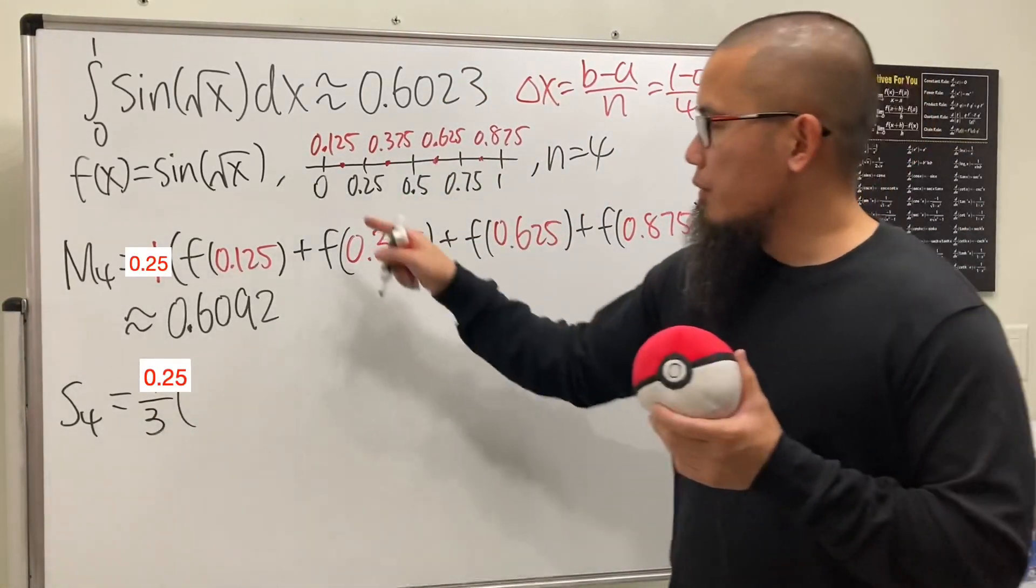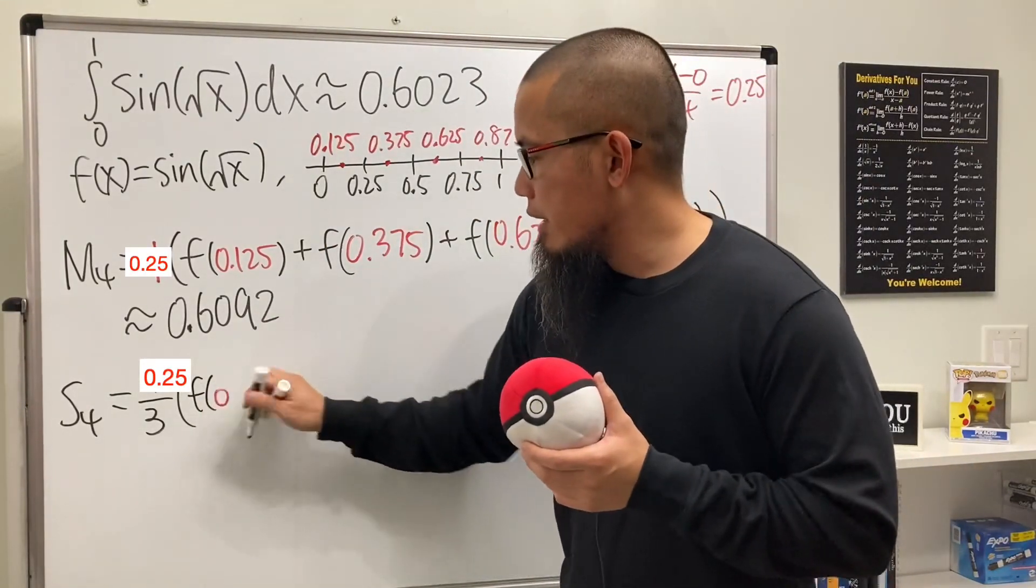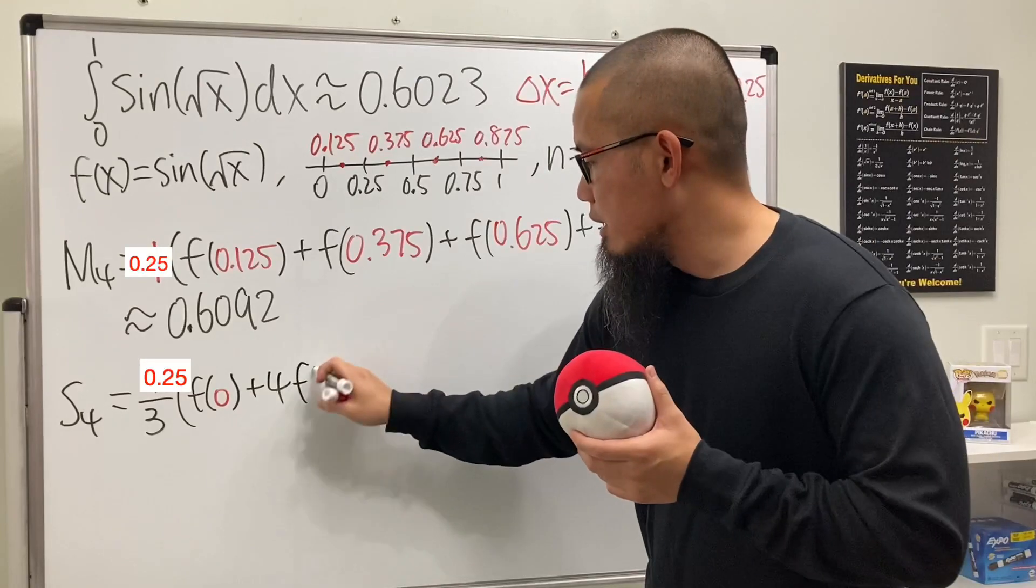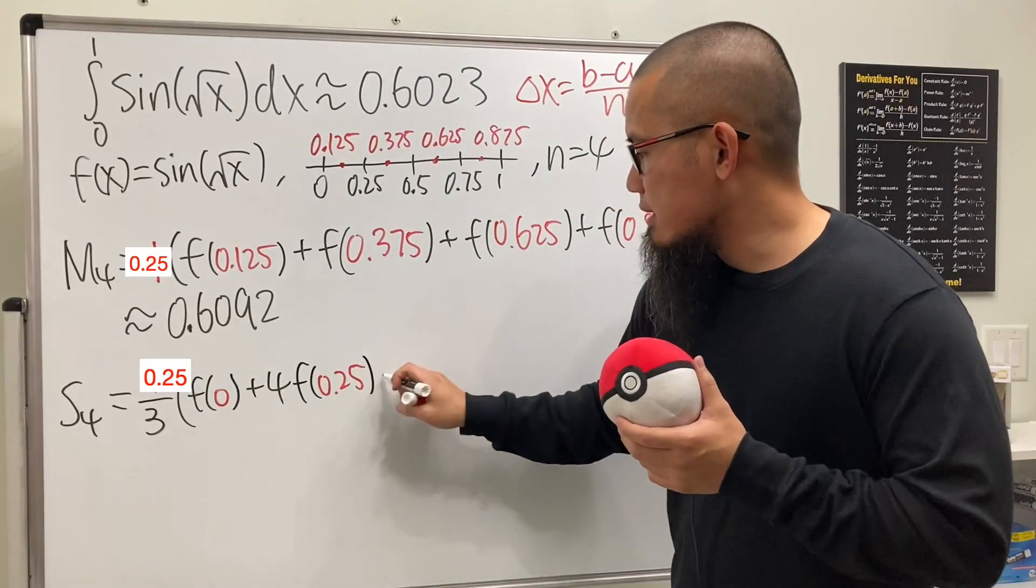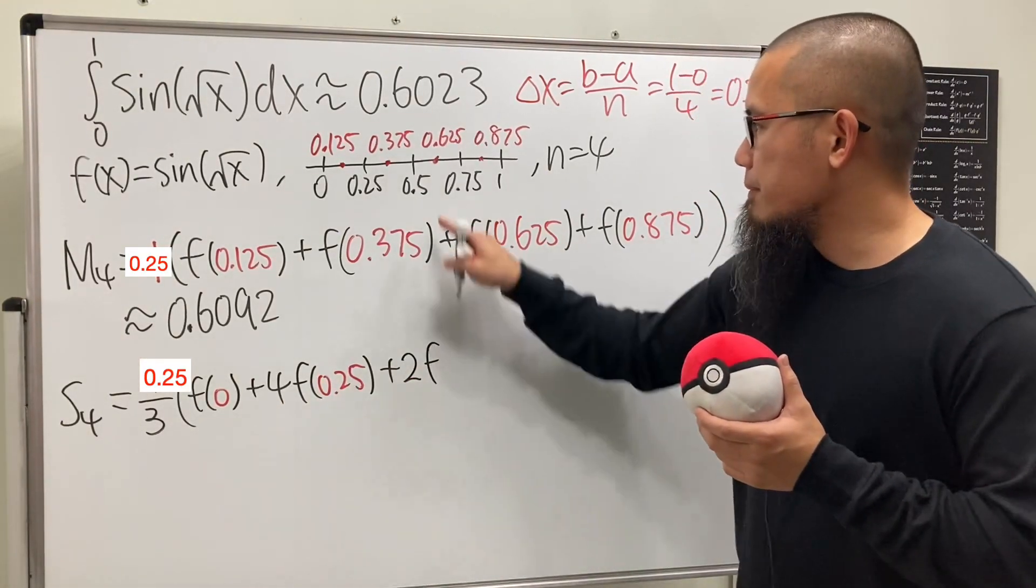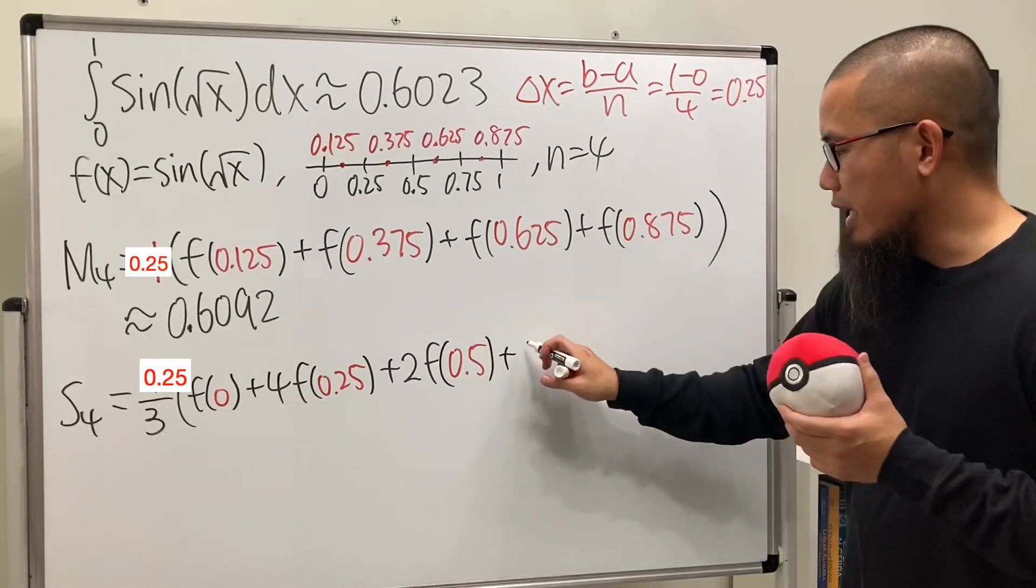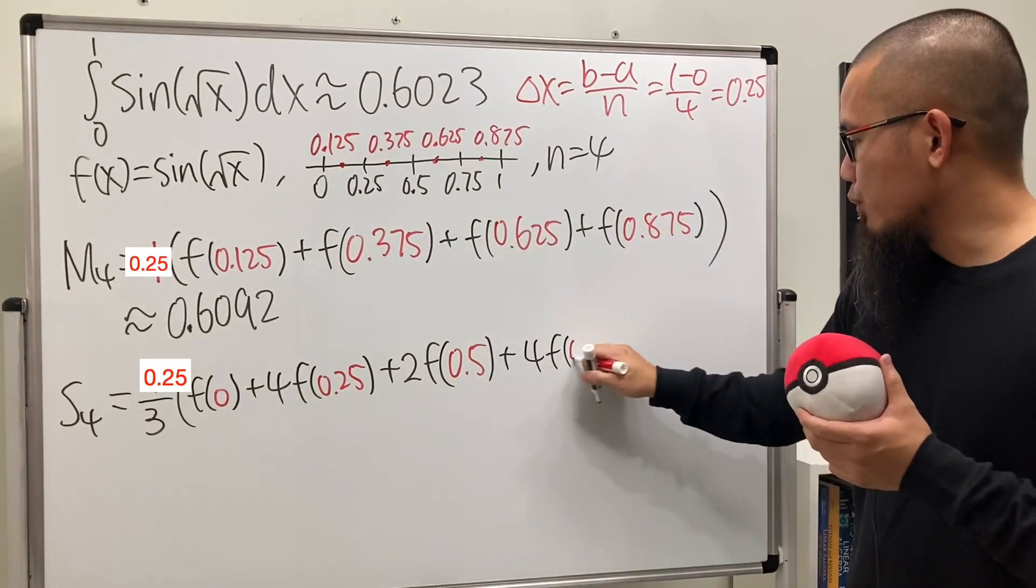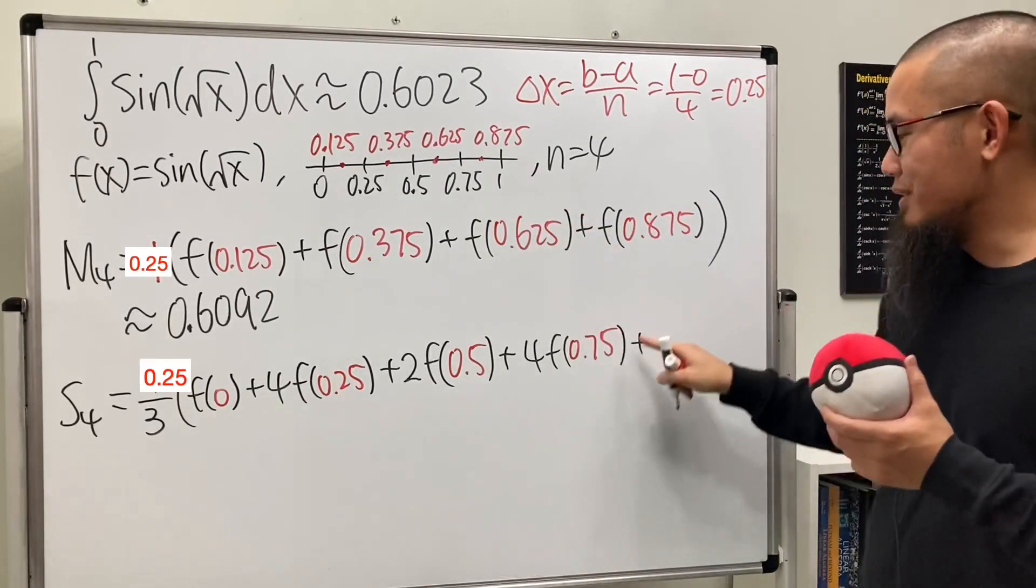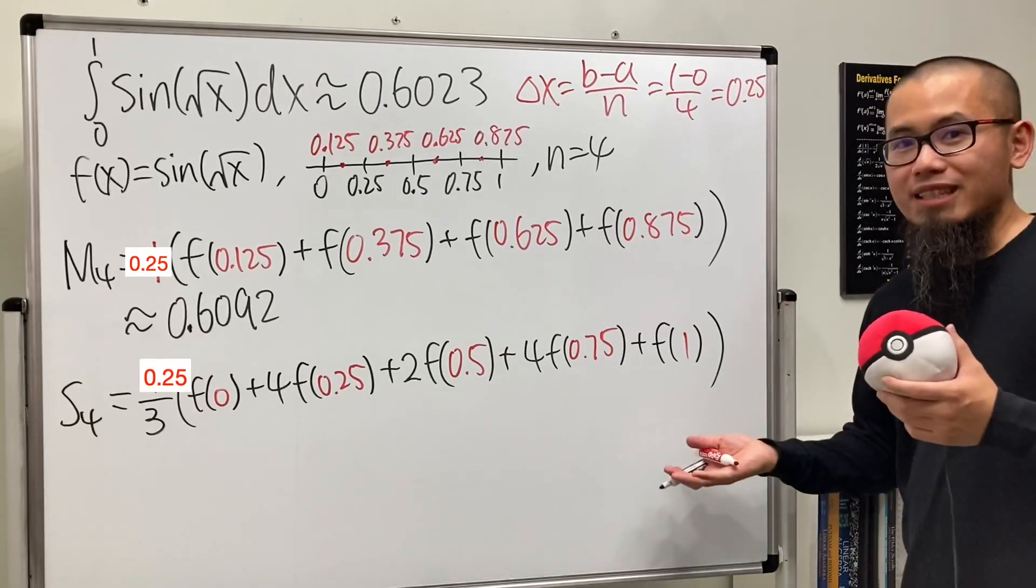For the first term, the coefficient is 1, so f of 0. For the next term, the coefficient is 4, and we plug in 0.25. The next coefficient is 2, and f of 0.5. The next one is 4 again, f of 0.75. Lastly, we have the last x value where the coefficient is 1, and we put in f of 1.